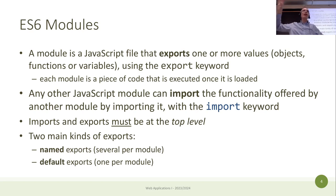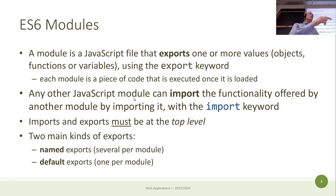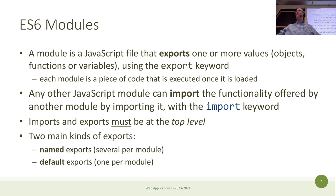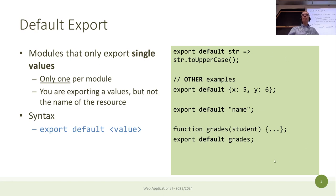If you want to import JavaScript modules in the browser — or as we'll do in React from next week — you use the `import` keyword available since ES6. Importantly, `import` and `export` must be at the top level; they cannot be nested inside functions. There are two types of exports: named exports and default exports.